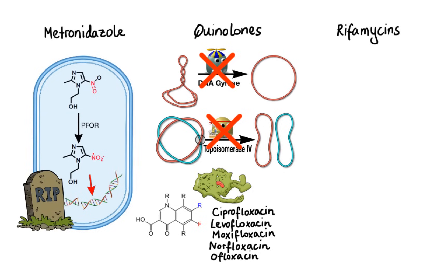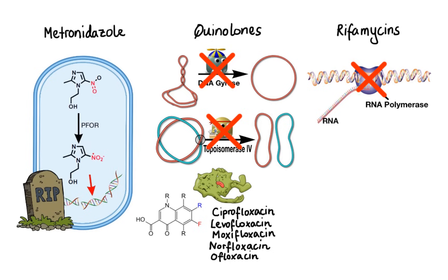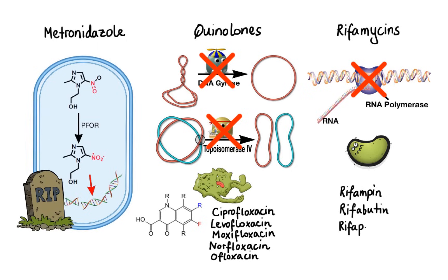Now let's move on to rifamycins. In contrast to quinolones that inhibit DNA replication, rifamycins interfere with transcription of bacterial DNA into RNA. Specifically, rifamycins target the enzyme responsible for transcribing DNA into RNA, called RNA polymerase. By combining with this bacterial DNA-dependent RNA polymerase, rifamycins halt all synthesis of RNA. Without RNA, the bacteria cannot make proteins essential for their survival, so cell death eventually results. Examples of rifamycins are rifampin, rifabutin, and rifapentine.